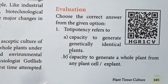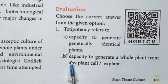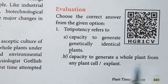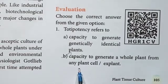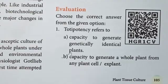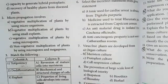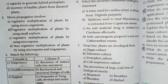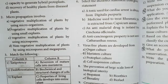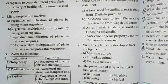Now we have to see the first question. Answer: Option B — Capacity to generate a whole plant from any plant cell or explant. Second question answer: Option B — Vegetative multiplication of plants by using small explants.